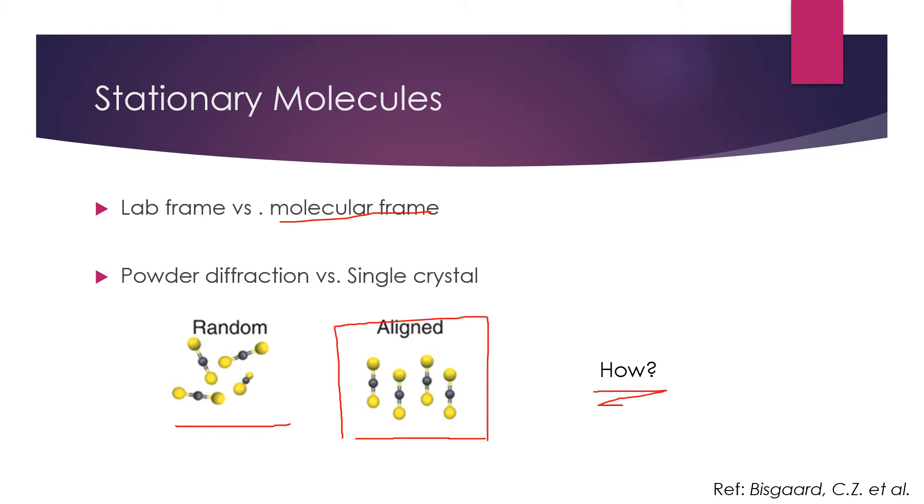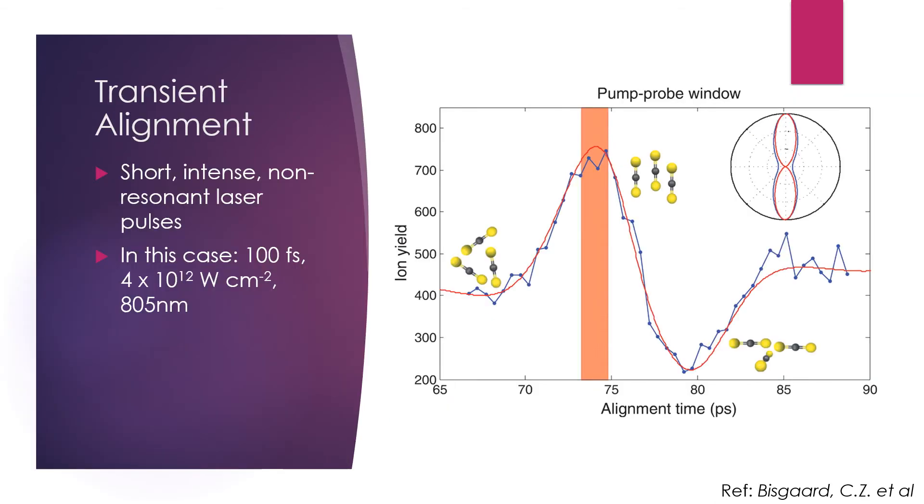We can achieve transient alignment of the molecules through exposing them to short, intense, non-resonant laser pulses. This excites low-lying rotational energy levels, creating a rotational wave packet, which propagates over time in this oscillating pattern shown here.